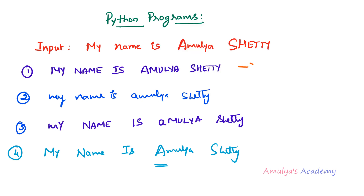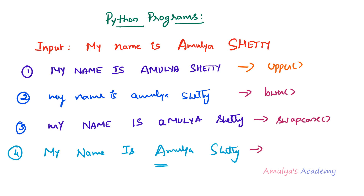If I want to change all the alphabets of the given input to uppercase, I will use the string method upper(). If I want to change it to lowercase, I can use the lower() method. If I want to swap the case, I can use the swapcase() method. If I want to change the first letter of each word to uppercase, I can use the title() method.